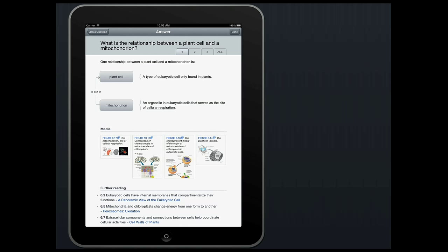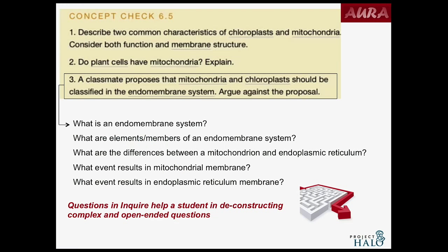Looking at the third question type, it's not really a question at all — the textbook authors are proposing something that's actually false, and you're asked to argue against it. Most students would hesitate; they wouldn't know how to start. With our system, they're able to ask a simple question — what is an endomembrane system — and then from there use related questions and content in the answer to work towards a deeper understanding.